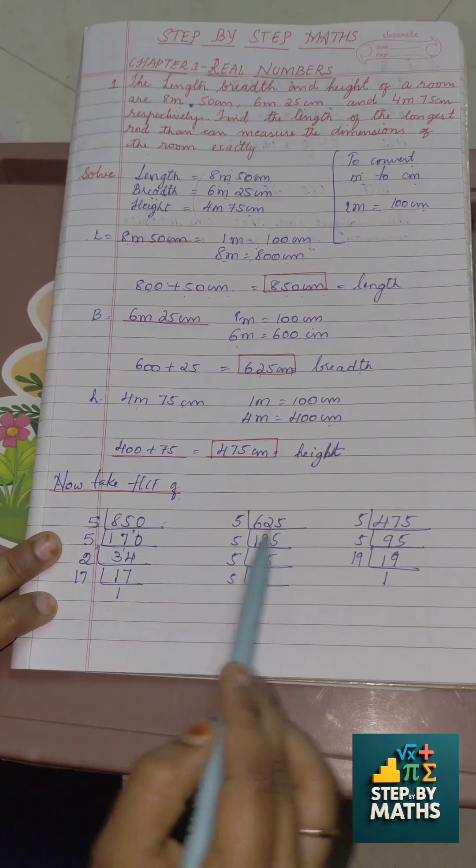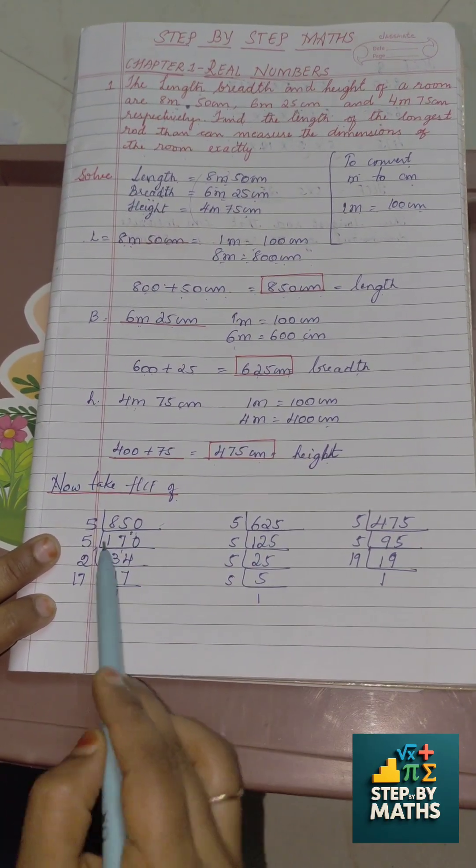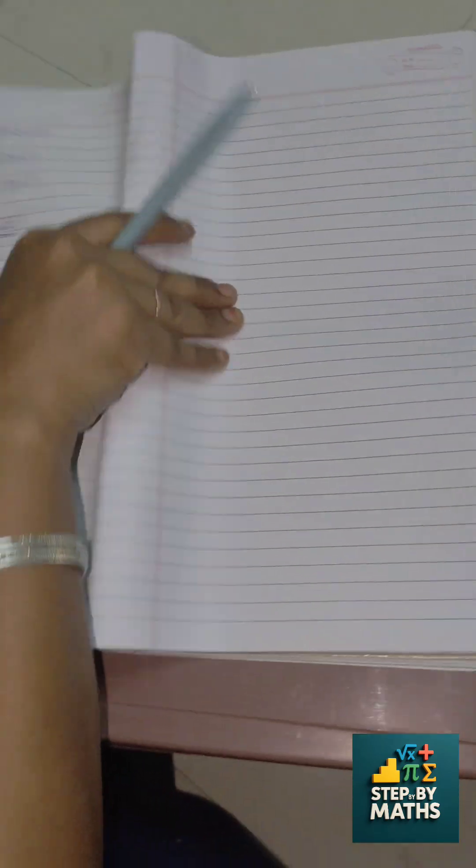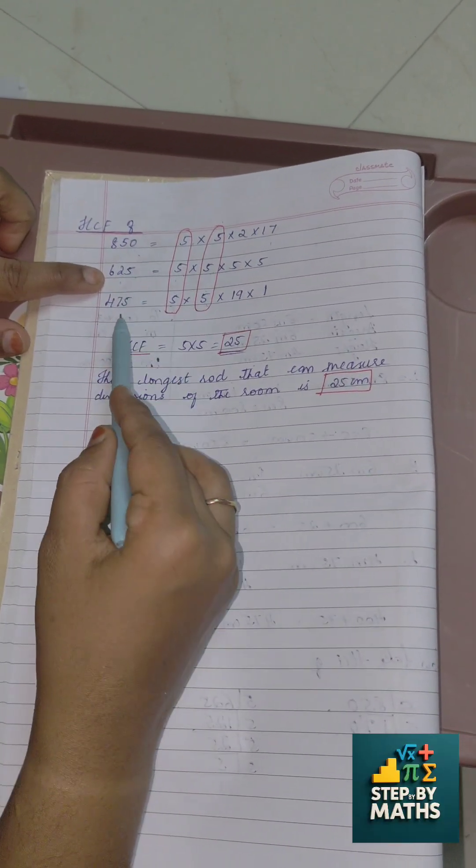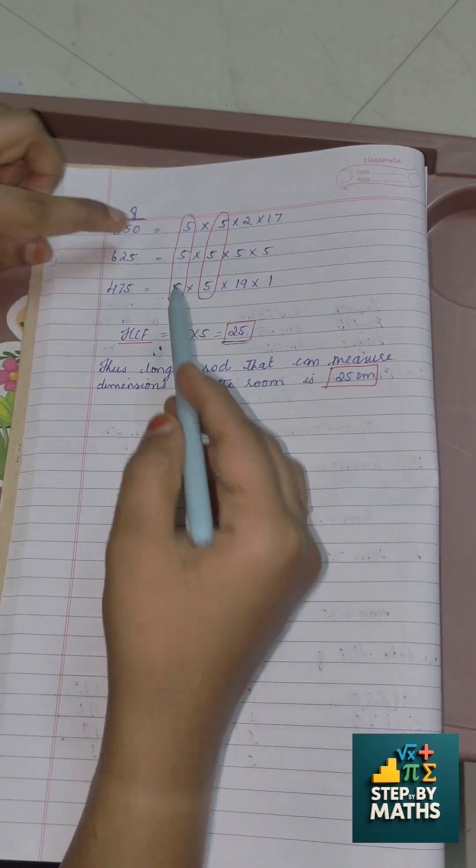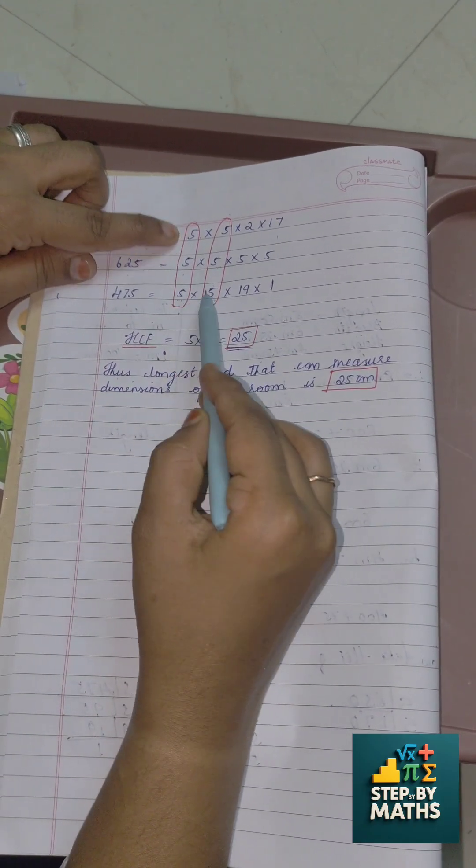Now take the HCF of these three numbers: 850, 625, 475 in this way.